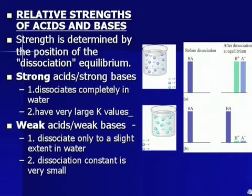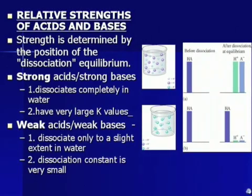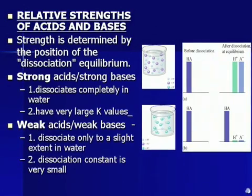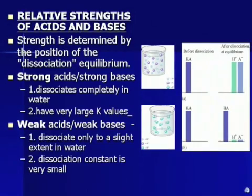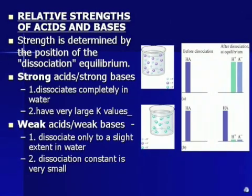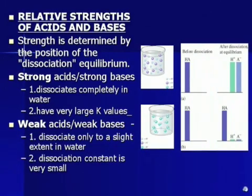Weak acids and weak bases dissociate only very little. If you start with a bunch of HA and it's a weak acid, only very little of it will go to H+ and A−; the majority will stay as HA. The dissociation constant is very small — we're talking about 10 to the negative five, 10 to the negative six, 10 to the negative ten even. Very weak.